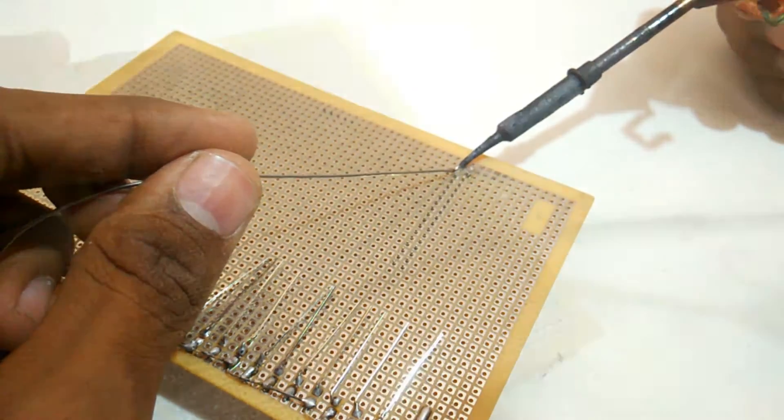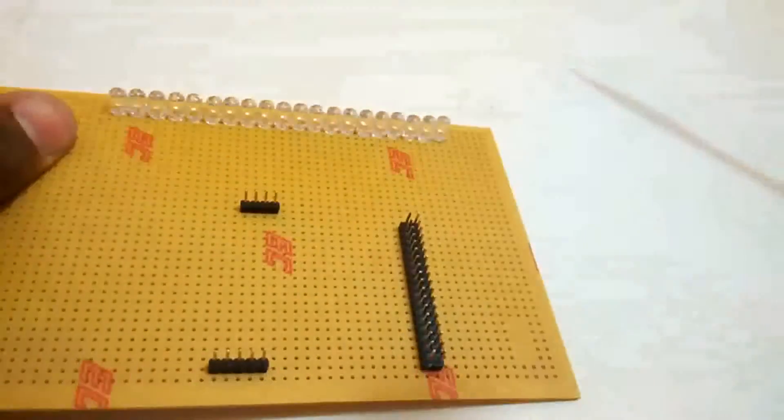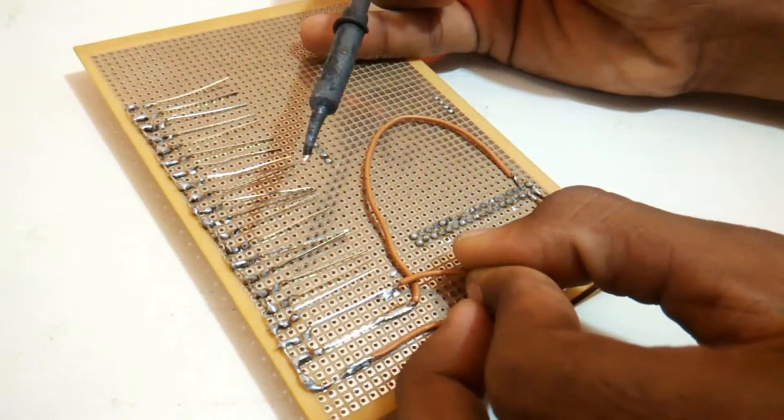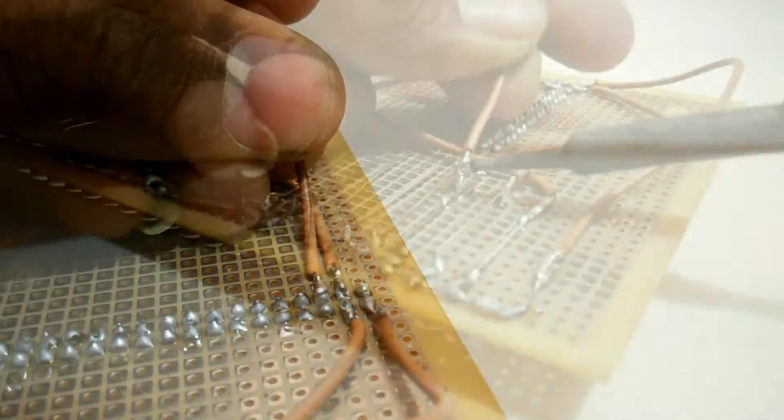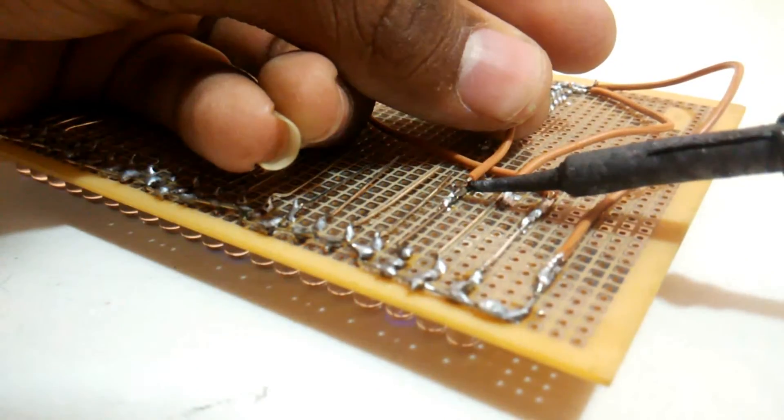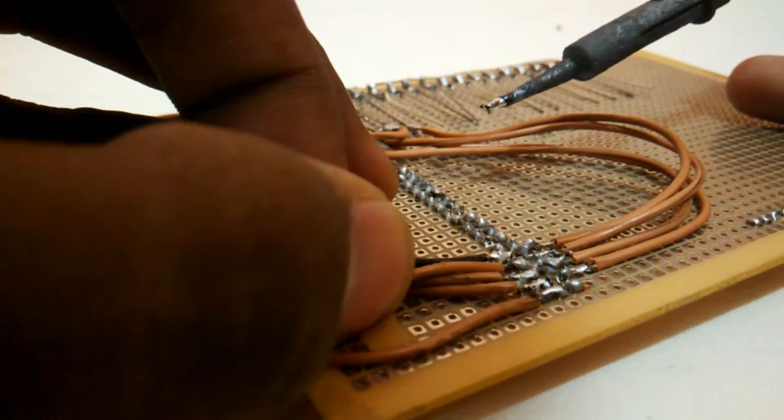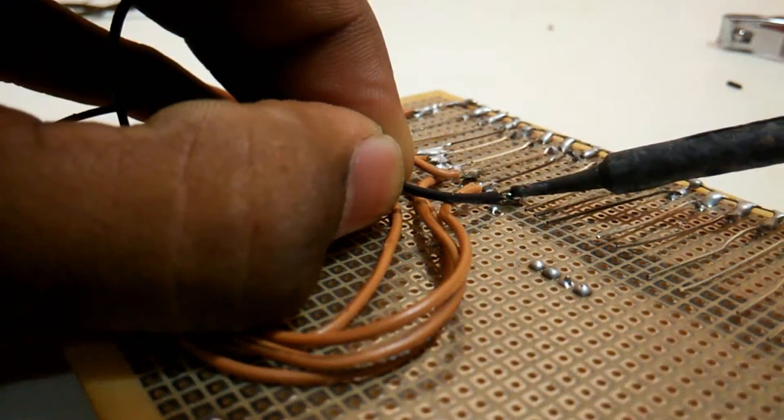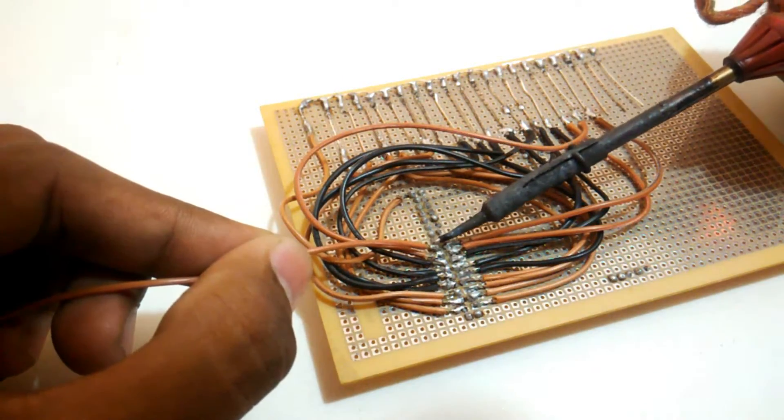Once the soldering process for all the header pins has been completed, we can start wiring as we have done on the breadboard. Starting from pin number 22 of the Arduino and ending at pin number 41 of the Arduino are directly used to light up the LEDs as the dB meter will always do. All the information about this project can be found on my Instructables page, whose link is in the description below.